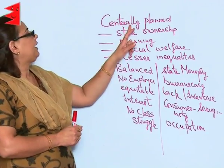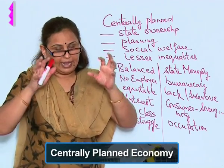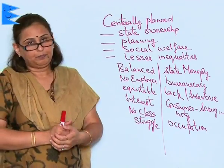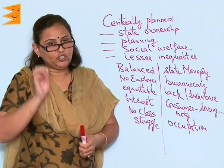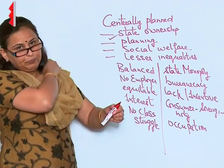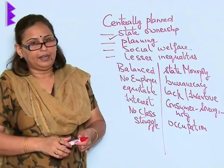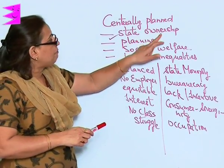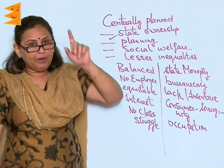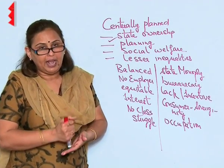The first kind we are talking about is the centrally planned economy. The centrally planned economy is also termed as a socialist economy. In this kind of economy, the first feature is state ownership, meaning the government organizes, holds, and has everything in its own hand. The government has ownership over all the resources — that is the first feature of the socialist or centrally planned economy.